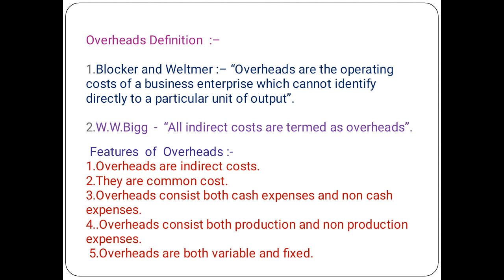Second feature: overheads are common costs. Why are overheads called common costs? Because every department uses indirect material, indirect labor, and indirect expenses. Nobody can say they don't need any indirect material, indirect labor, or indirect costs. Therefore overheads are called common costs.